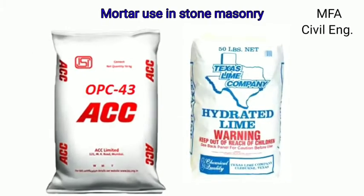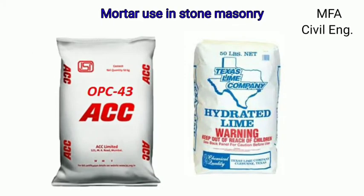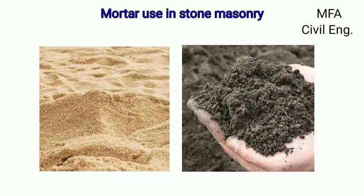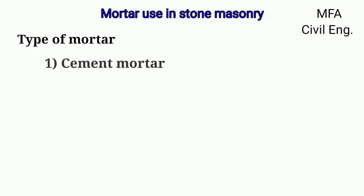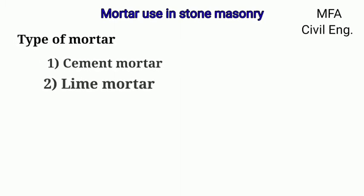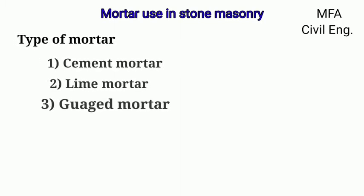Cement and lime are generally used as a binding material, and sand and surkhi are used as fine aggregate. There are three types of mortar: cement mortar, lime mortar, and gauge mortar, which are commonly used for the construction of stone masonry.